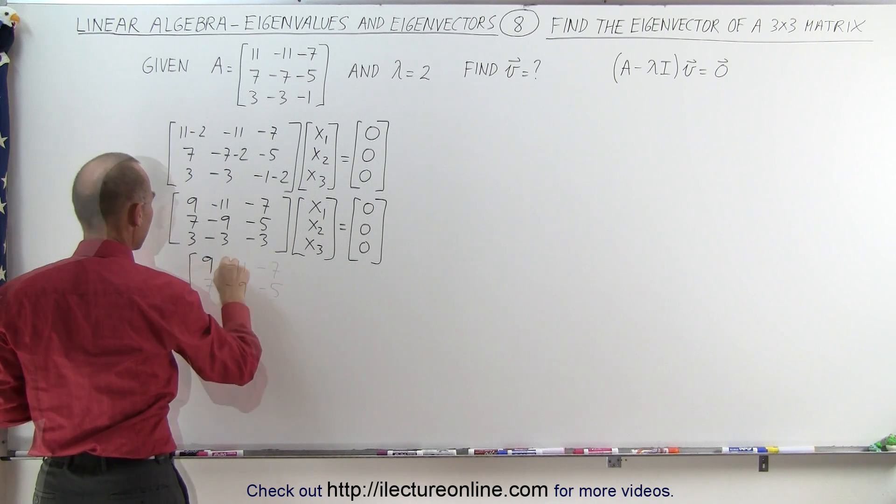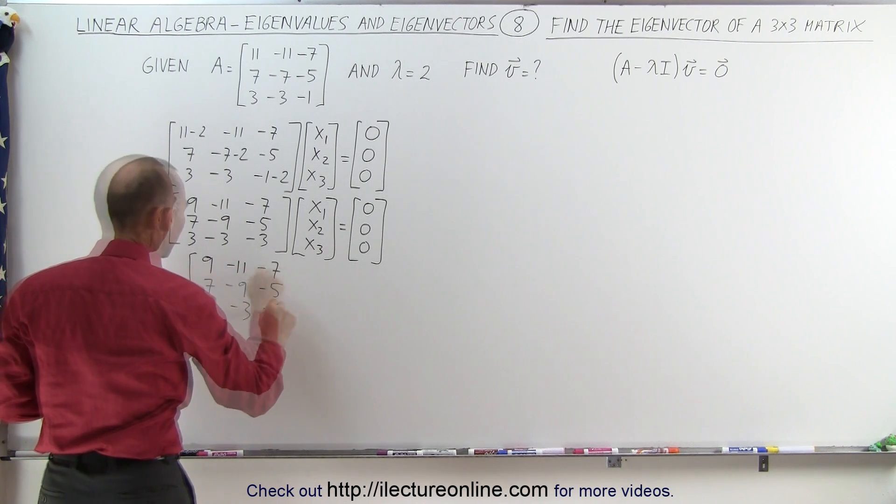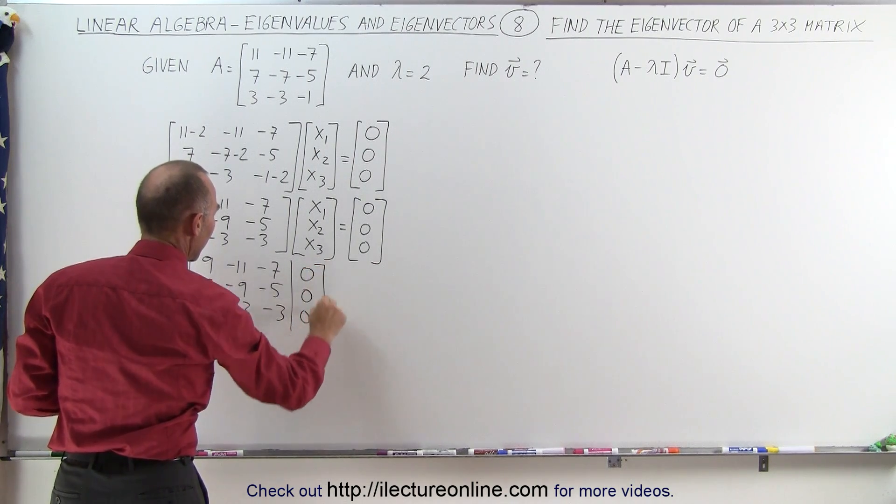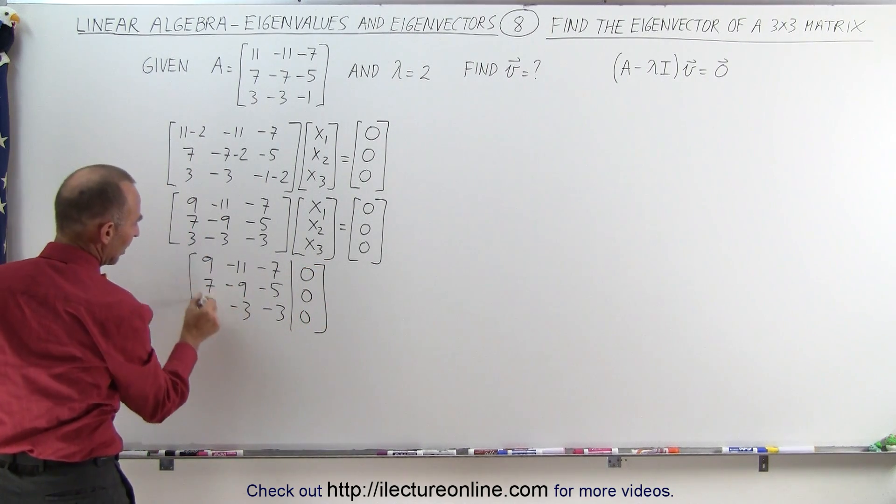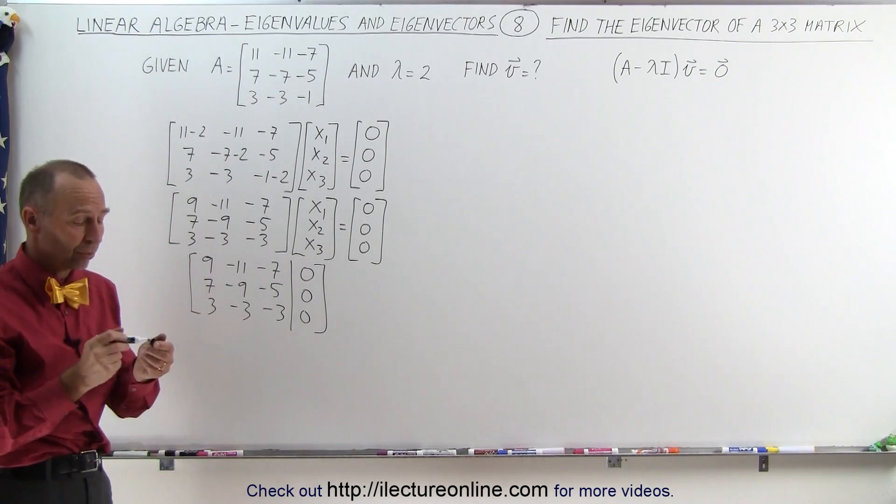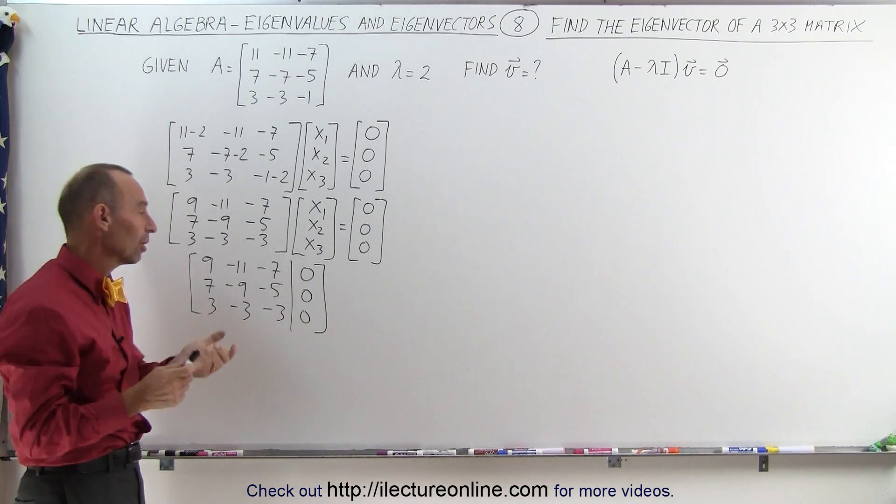So we'll write a 9, a minus 11, a minus 7, a minus 3, the augmented zeros here. And if we turn these three elements into zeros, we'll be able to read the values for X1, X2 and X3. That's the reduced echelon form.